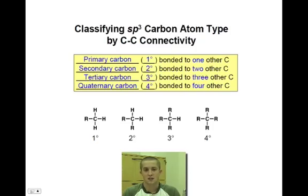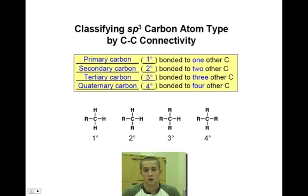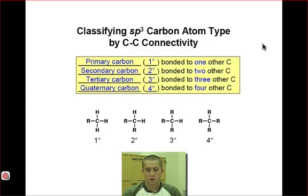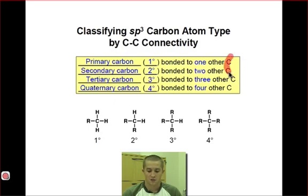Organic chemists apply classification systems to distinguish differences between specific atoms. None of these systems are difficult to understand, but each will become useful when understanding reactivity. When classifying sp3 carbon atoms — whether they be primary, secondary, tertiary, or quaternary — each classification depends on the number of carbon atoms that the specific carbon atom of interest is connected to.